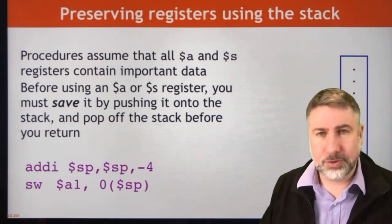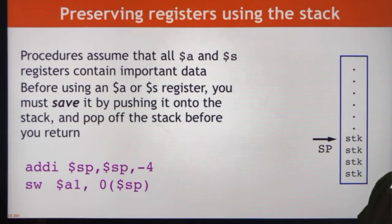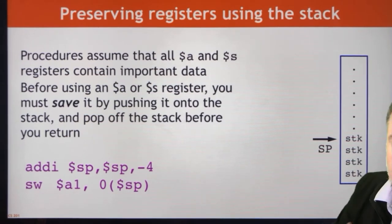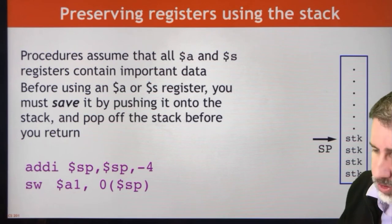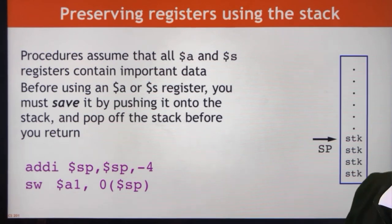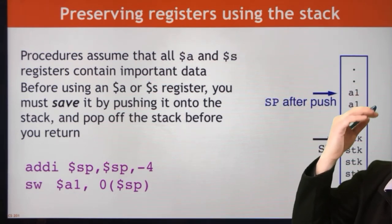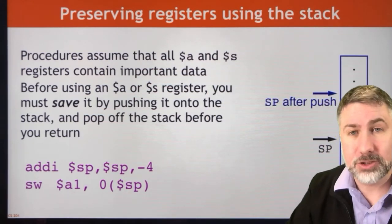If you want to preserve a register on the stack, you're just going to push it onto the stack. Procedures assume that all A and S registers contain important data, so if you want to use an A register or an S register, you need to push it onto the stack using: add immediate minus four to the stack pointer, then store word that register onto the stack. That pushes the register onto the stack, and when we're done, we can pop it off and retrieve it back into the same register we stored it from.